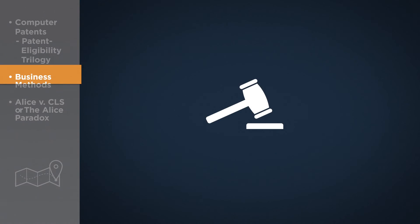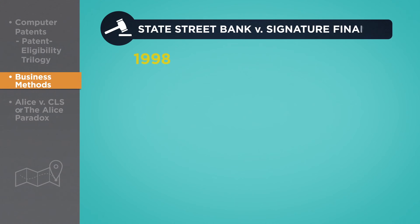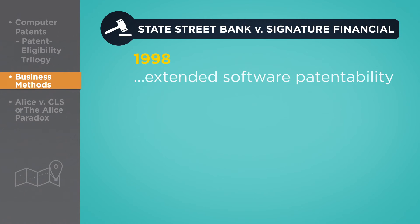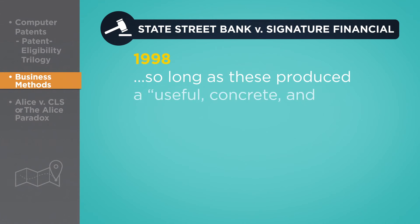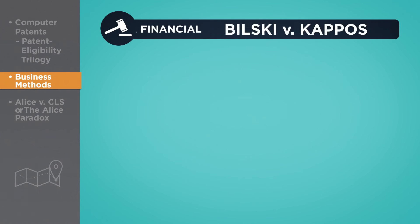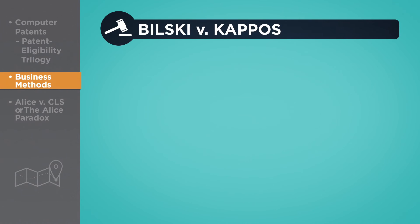This view was further augmented by a 1998 decision by the U.S. Court of Appeals for the Federal Circuit in State Street Bank v. Signature Financial Group, which extended software patentability to software-enabled methods of doing business, so long as these produced a useful, concrete, and tangible result. But this was not to last.